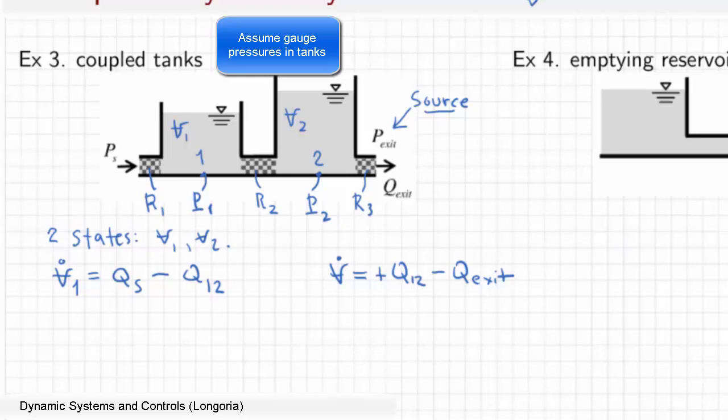So in order to finish writing these equations, you need to get rid of the variables in terms of either inputs or states. The inputs are P_S and P_exit, and the states are V1 and V2.